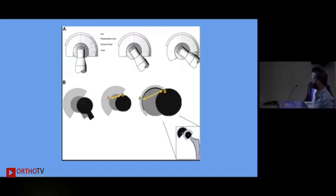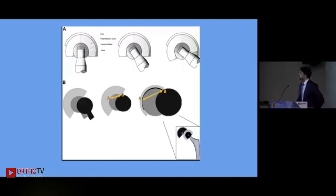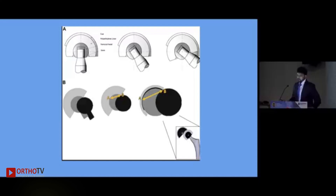This diagram shows the mechanism of movement of a dual mobility hip. The inner ceramic or metal cup moves inside the polyethylene liner; first the neck impinges against the polyethylene liner, and further increase in range of motion happens once the polyethylene liner moves inside the acetabular shell. With a 28 mm head, the jump distance is small, while with a 36 mm head the jump distance is greater, giving more stability and preventing dislocation of the hip.